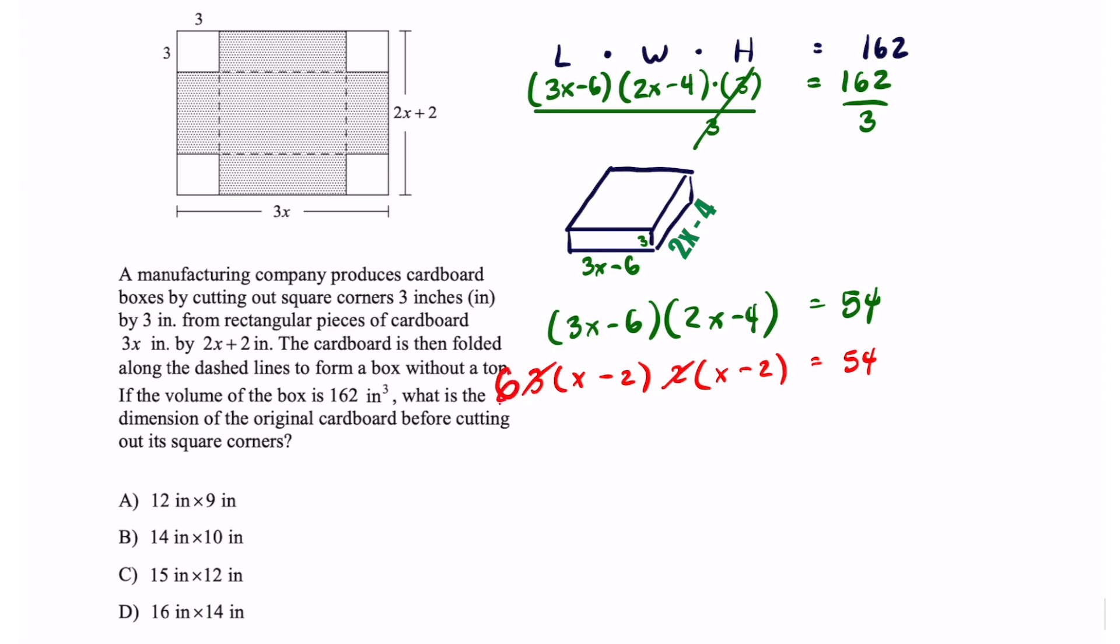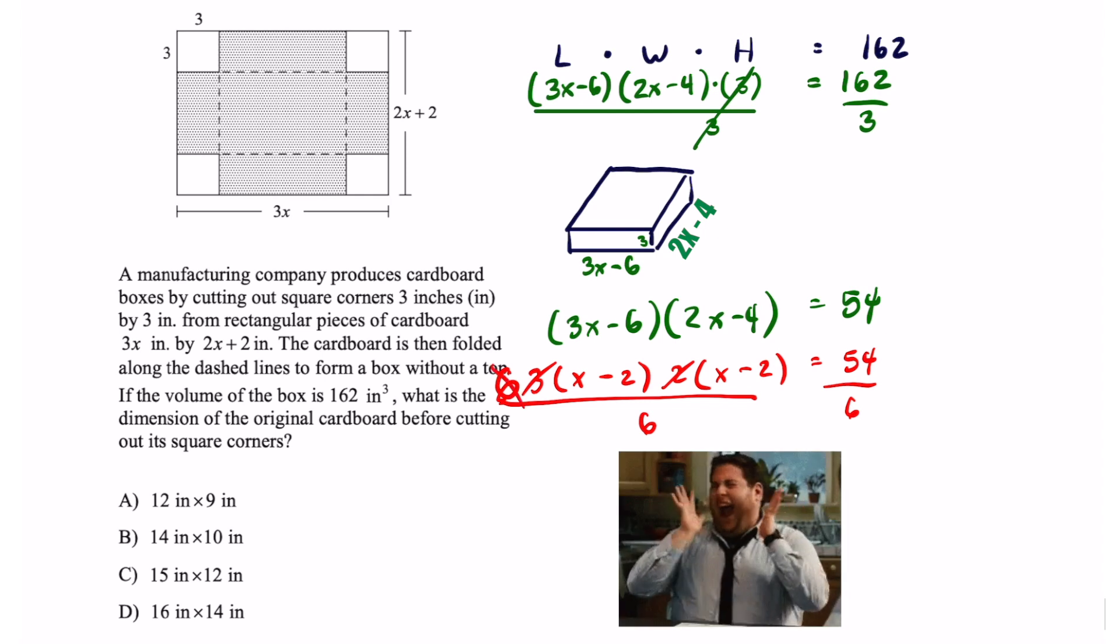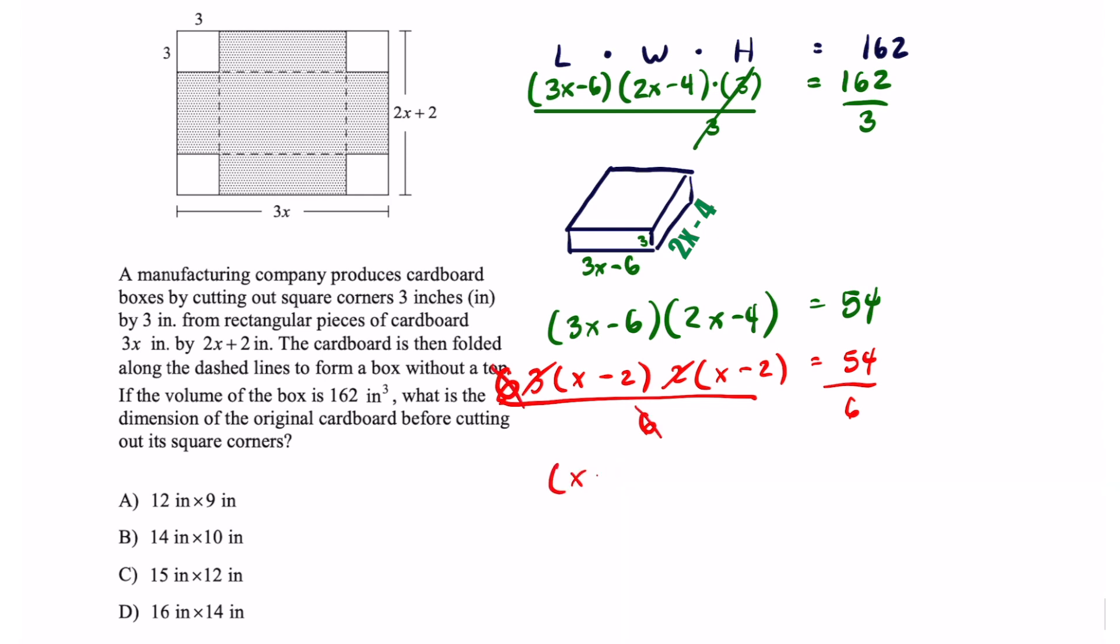And once again if I divide both sides by 6 it's going to make my numbers a lot smaller. That's going to cancel this out. I'm left with x minus 2 times x minus 2. 54 divided by 6 is 9.